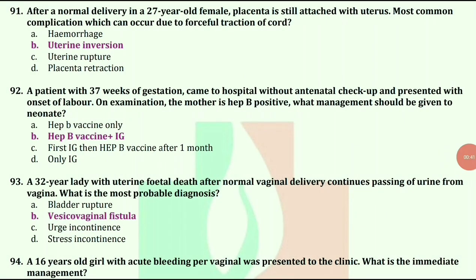After a normal delivery in a 27-year-old female, placenta is still attached with uterus. Most common complication which can occur due to forceful traction of cord? The answer is uterine inversion.